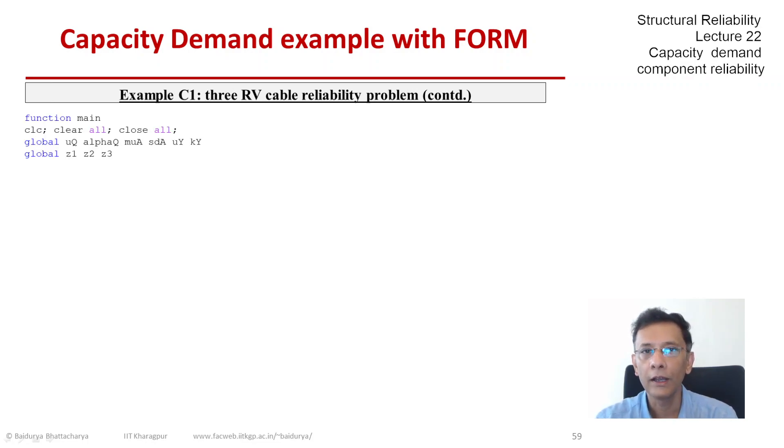We define the main function where all the variables are either defined or computed. The main function is called the fmincon, which is one of the standard programs in MATLAB for constrained non-linear optimization.